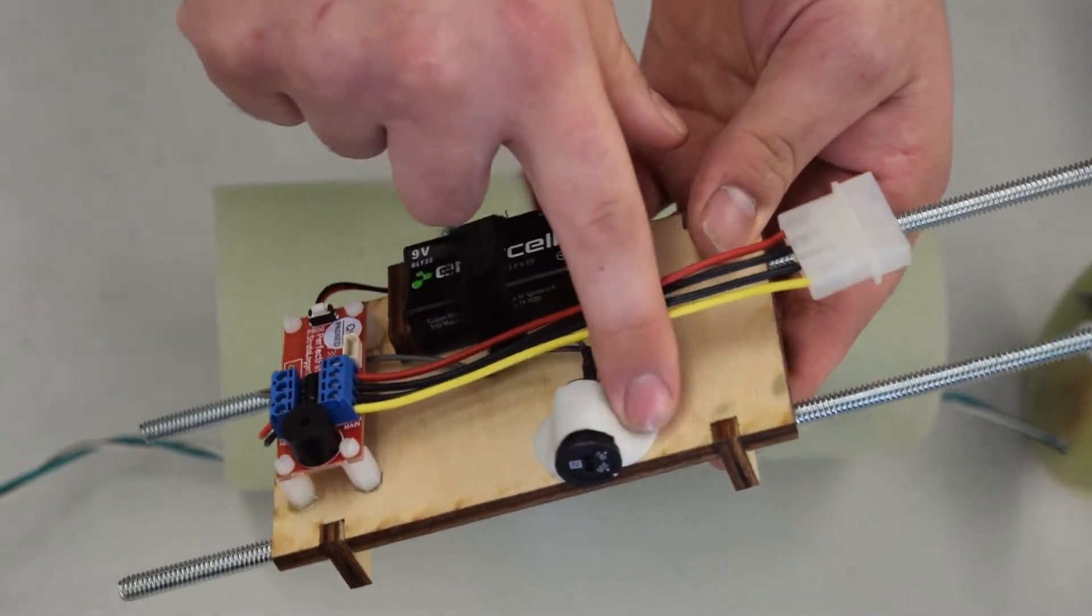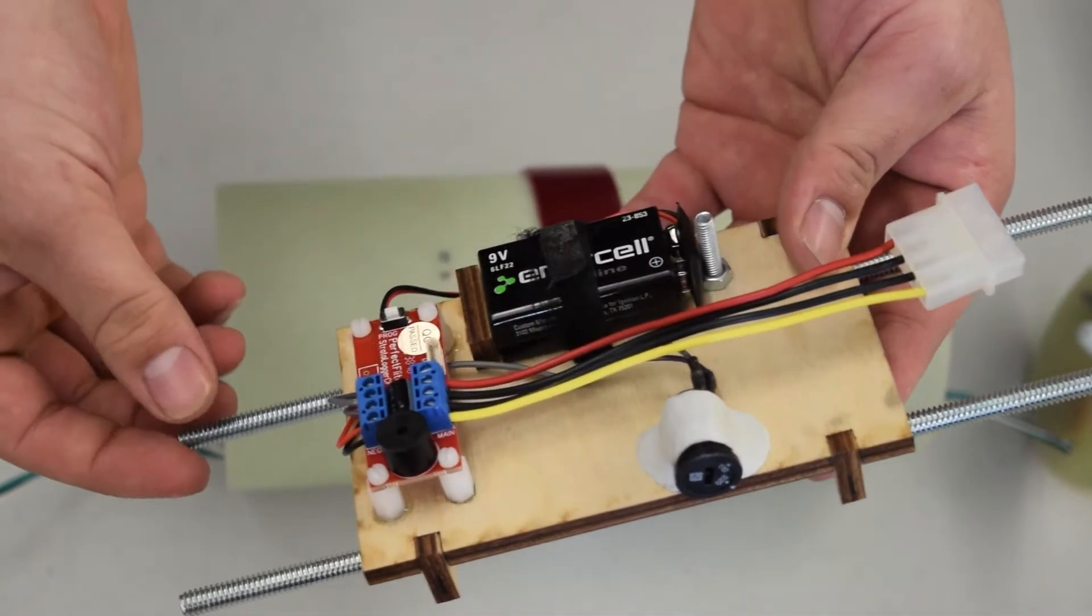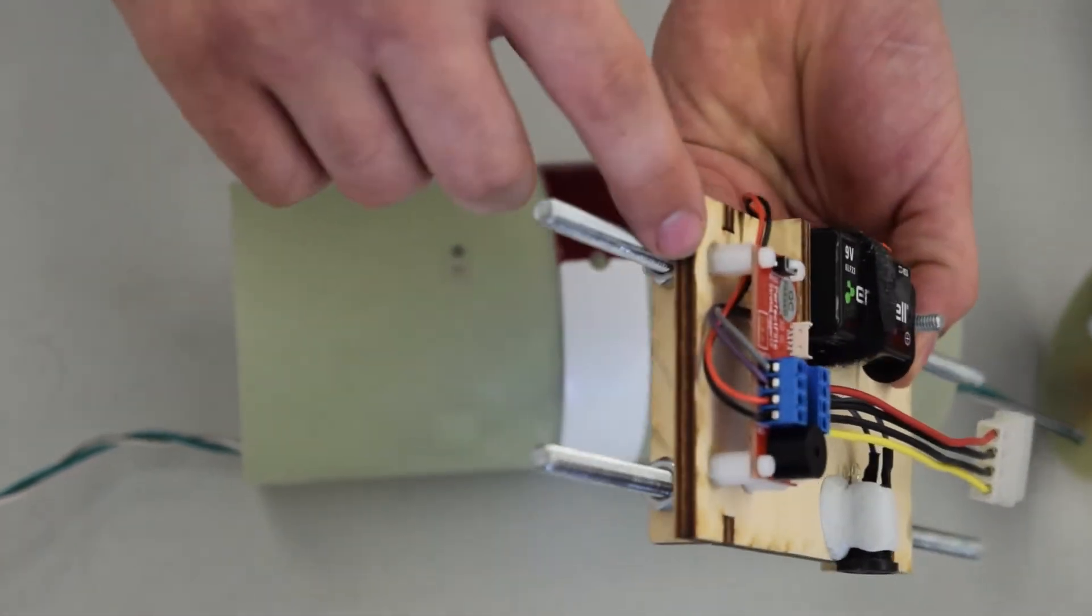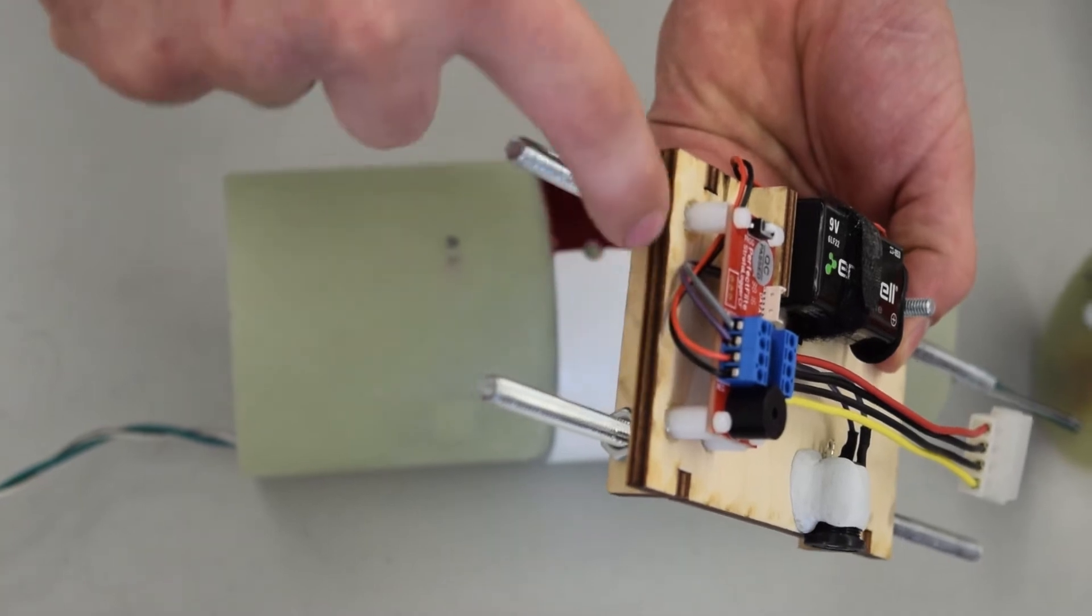And to hold this switch in, we just used, again, epoxy putty. And the altimeter is mounted on screw posts that are epoxied into the wood also.